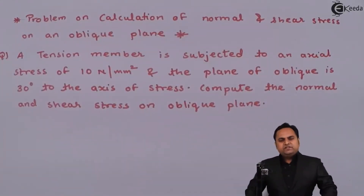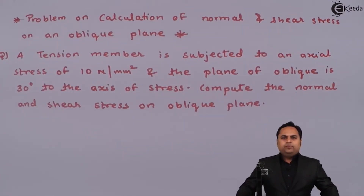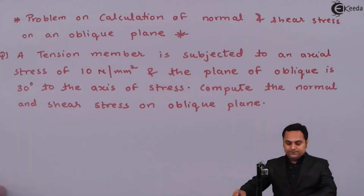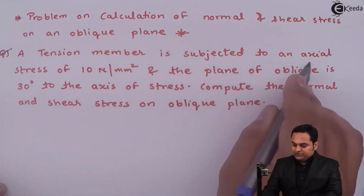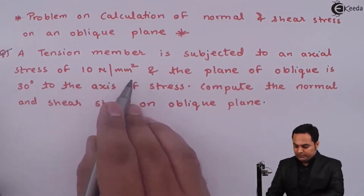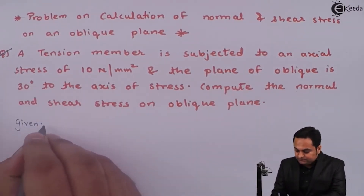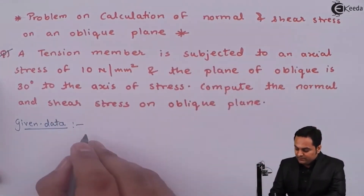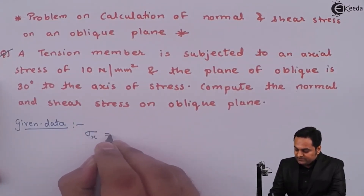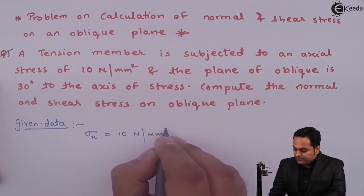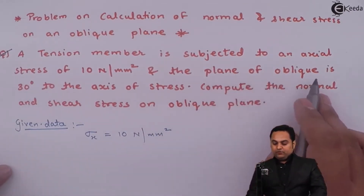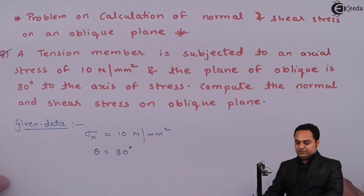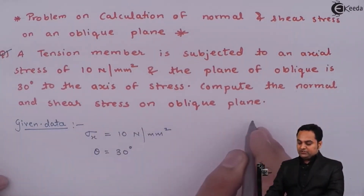Hello friends, in this video we will see a problem on calculation of normal and tangential stresses on an oblique plane. A tension member is subjected to an axial stress of 10 Newton per mm square — I'll write it in the data. It is given that it is a tension member and stress is given, so I'll write it as Sigma X, assuming it to be in the X direction: 10 Newton per mm square. The oblique plane is inclined at 30 degrees to the axis of stress, so theta is 30 degrees.